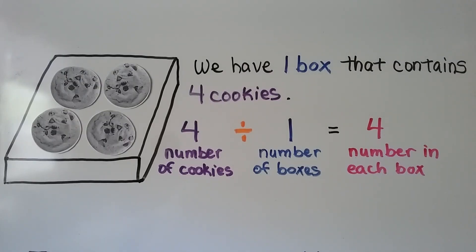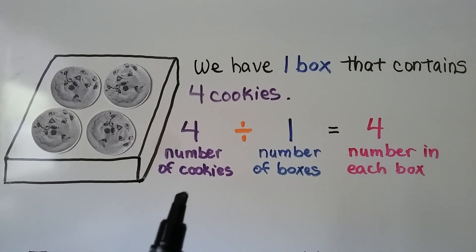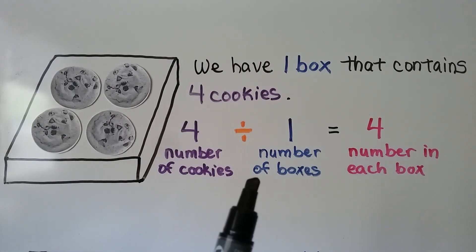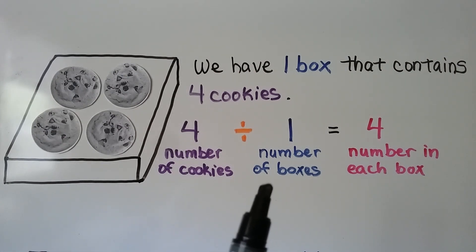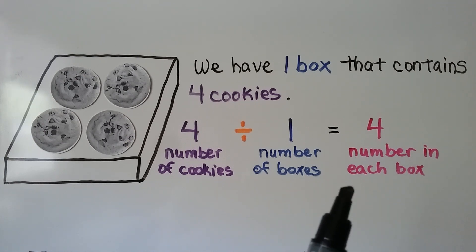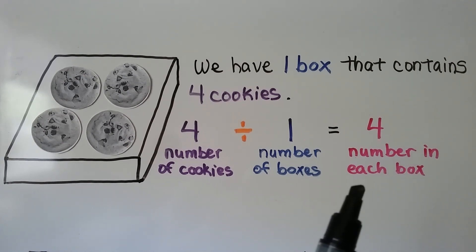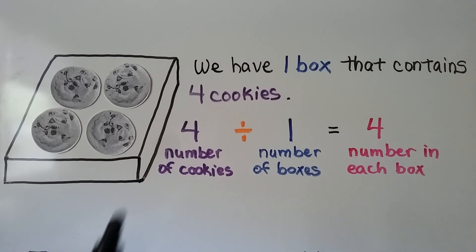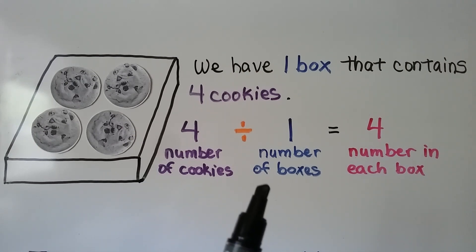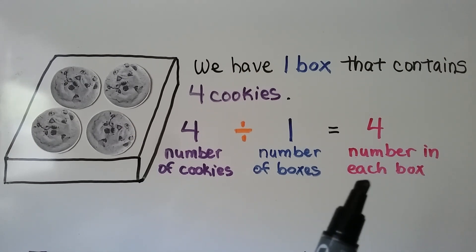Here we have 1 box that contains 4 cookies. The number of cookies we have is 4. We're dividing it into the number of boxes, which is 1. So we have 4 in each box. We've got 4 cookies and we've only got 1 box, so there's going to be 4 in that box.